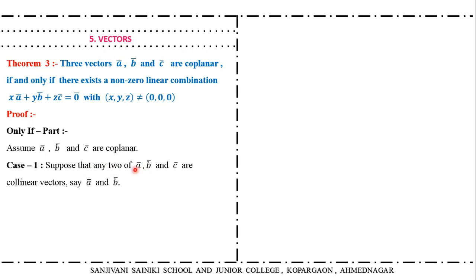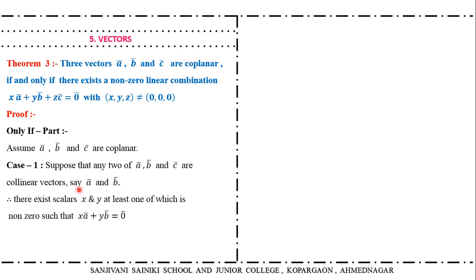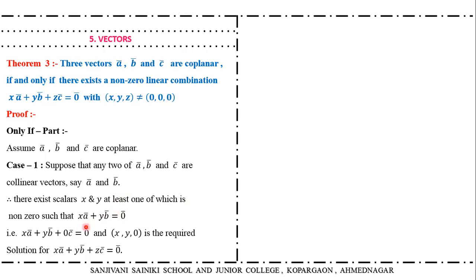Case one: suppose two of the vectors, say A bar and B bar, are collinear. Then there exist scalars X and Y, at least one nonzero, such that X·A bar plus Y·B bar equals zero bar. We can add the third vector with coefficient zero: zero times C bar equals zero. So we get scalars X, Y, and zero such that X·A bar plus Y·B bar plus zero·C bar equals zero bar, as required.